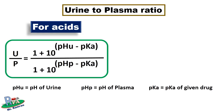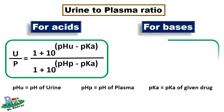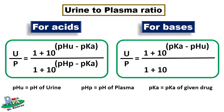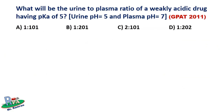If you are asked for a basic drug, then you have to use a different formula. It looks very similar — you just have to make changes to the power of 10. Here, you subtract pHu and pHp from the pKa instead. That's it. Now you know the formulae — let's start with our earlier problem.